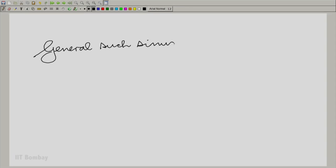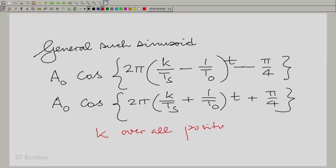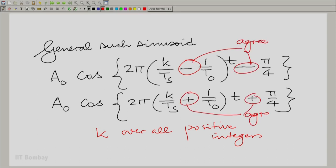General such sinusoid: A_0 cos(2π k/t_s) times t. We have written this before, k over all the integers, positive integers. And the minus goes with the minus and the plus goes with the plus.